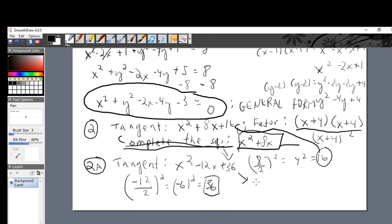You would add plus 36, and you have completed the square. What are the factors of this? The factors are x. Square root of x² is x, square root of 36 is 6. There's a minus here, so the factors are (x-6) times (x-6), also known as (x-6)².